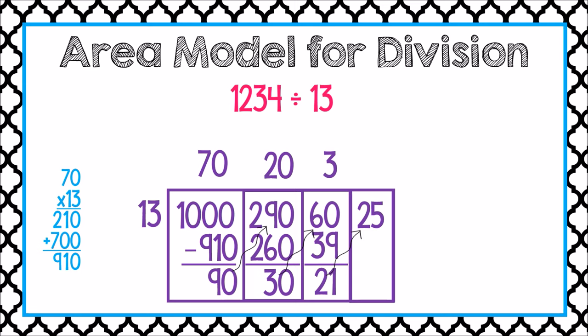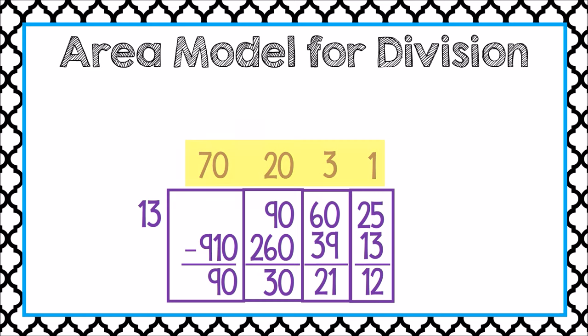I can divide 13 into 25 one time. 13 times 1 is 13, and we have a remainder of 12. Wow, look at all the times I was able to divide 13 into the number 1,234. That means I repeatedly subtracted 13 from 1,234 this many times. When I add all of these numbers together, I find out that 13 divides into 1,234 94 times, with a remainder of 12. In other words, 1,234 divided by 13 is 94, with a remainder of 12.